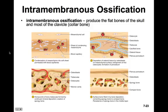In intramembranous ossification, we'll see the production of flat bones of the skull and the clavicle or the sternum. There's a lot of detail presented on intramembranous ossification, but the focus is on generally what happens. Some embryonic connective tissue called mesenchyme condenses into a layer filled with blood capillaries.